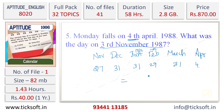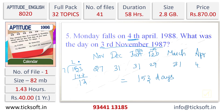Adding all these days gives us 153 days in total. Now we divide 153 by 7 to get the number of odd days. Since 153 divided by 7 gives a remainder of 6, we get 6 odd days.